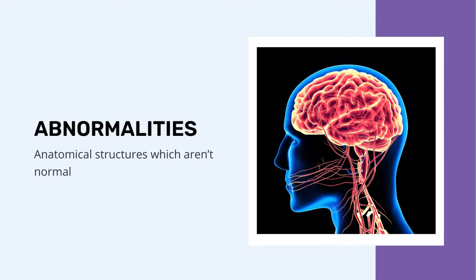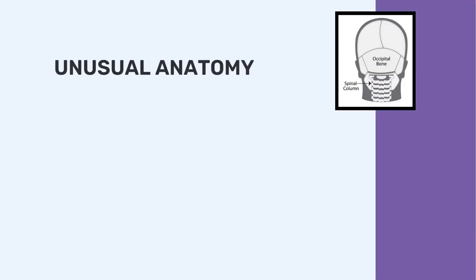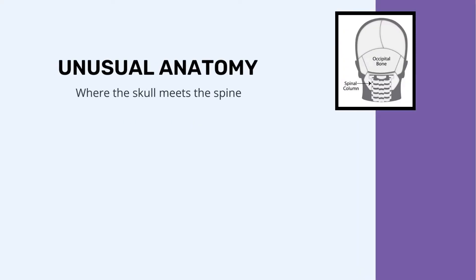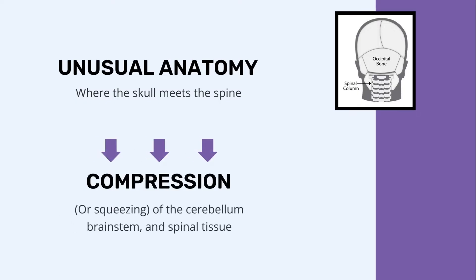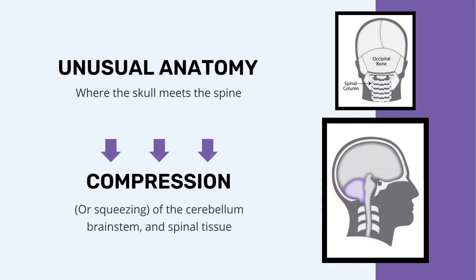And finally, abnormalities in this case refers to anatomical structures which aren't normal. So in broad terms, Chiari patients have unusual anatomy in the region where the skull meets the spine, which then causes compression or squeezing of the cerebellum, brainstem, and spinal tissue inside.